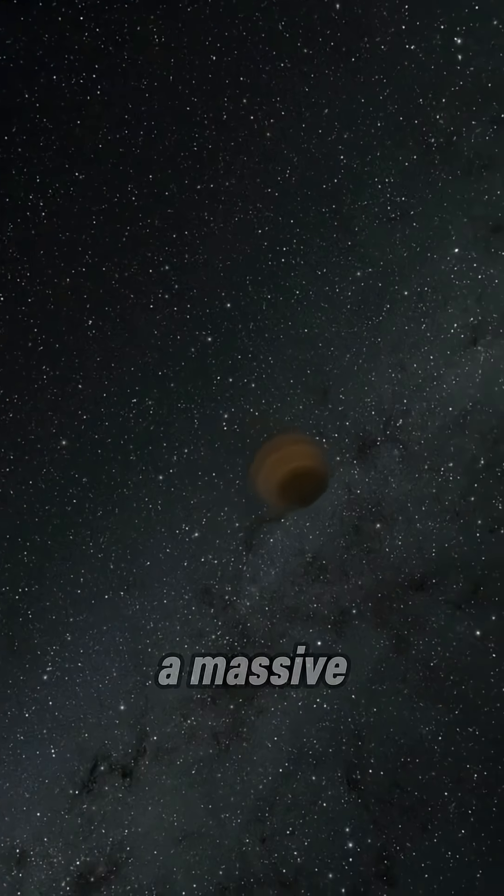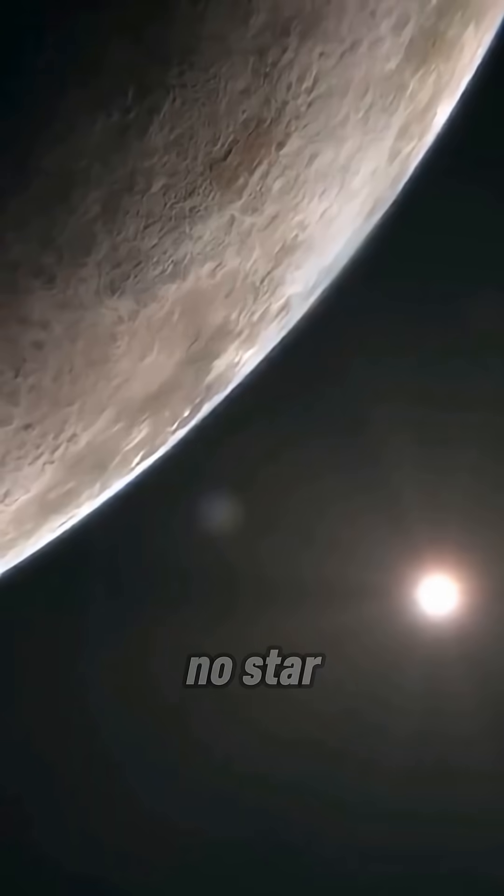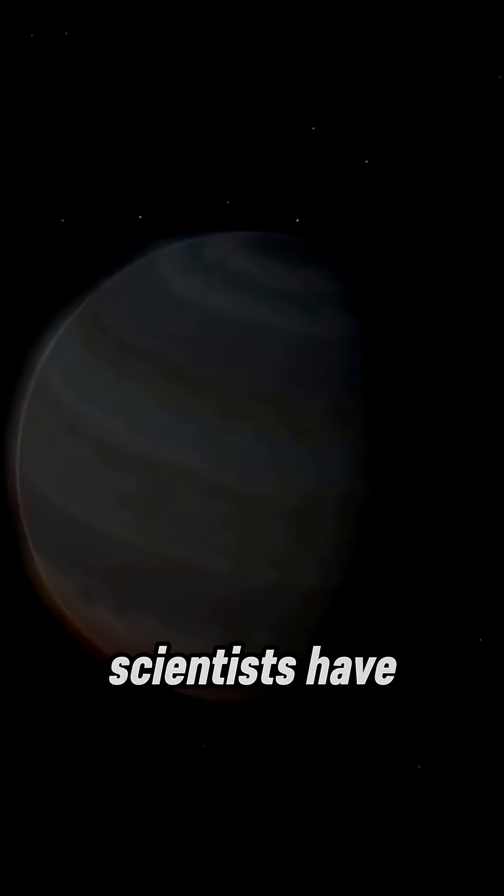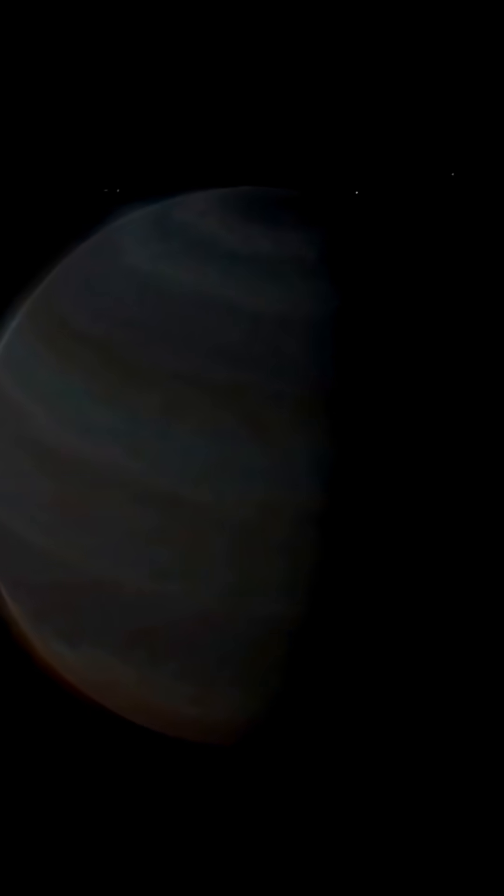Number 2. The rogue planet with no sun. A massive planet drifting through space alone, no star, no orbit, just darkness. Scientists have no idea how it formed.